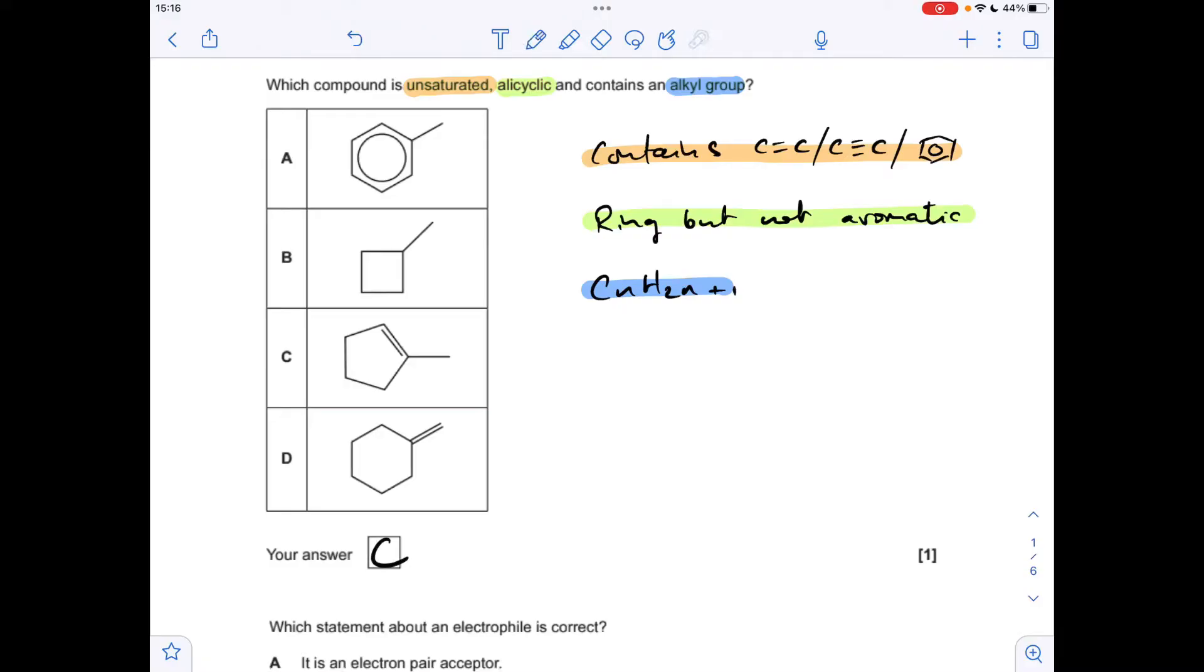The answer is C because we've got a carbon-carbon double bond so it's unsaturated. It's a ring but not an aromatic ring, not a benzene ring, so it is allacyclic. And it does have this alkyl group, this CH3 methyl group, so it satisfies all three whereas the other ones fall down on at least one of them.